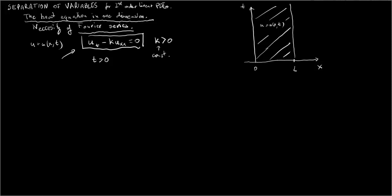So this is our heat equation, and we want to solve it for t greater than 0 and x between 0 and l, where we specify conditions for the solutions at the boundary of this region. The boundary of this region consists of three parts. First, there is an interval from 0 to l at t equal 0.